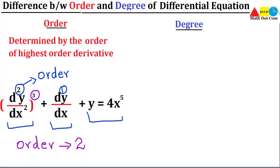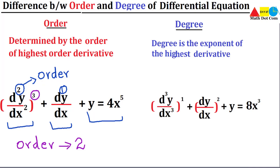Then we move towards the degree. The definition of the degree of the differential equation is: degree is the exponent of the highest derivative. Order and degree differ from the word exponent. Here we have an example and I will encircle it for your ease — this is the exponent of the derivative. These are the exponents, so keep this in mind.